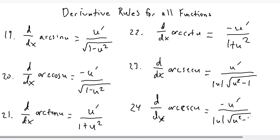So these come in pairs, and the ones that start with c — like cosine, cotangent, and cosecant — are the negative versions of sine, tangent, and secant.